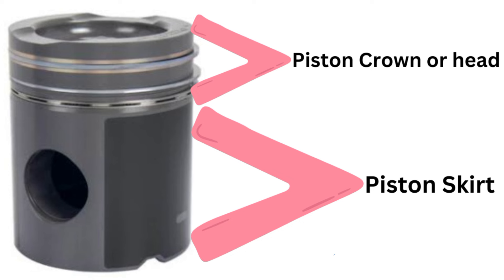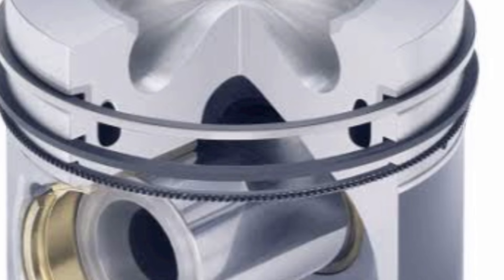The piston crown, which is the head of the piston, is usually bigger than the piston skirt, which is the downward part of the piston. The reason for that has been explained in another video, which I'm going to link to this video, so you can go to the description and watch that video about why the piston's crown is bigger than the piston's skirt.